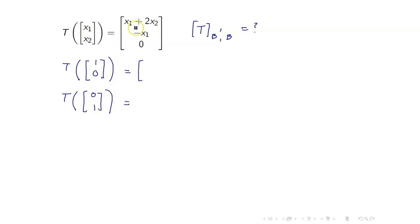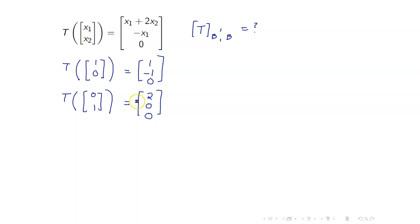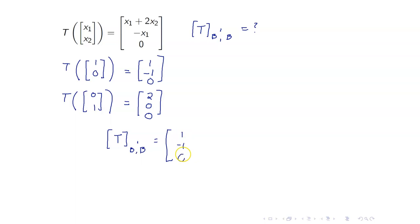T of (1, 0) is equal to 1 plus 2 times 0, so that's 1; the x1 component is negative 1, and then 0. T of (0, 1) is equal to 0 plus 2, 0, 0. Take note that this is also the coordinate vector with respect to the standard bases of R3. Therefore, the matrix representation from B to B' is just the matrix whose columns are (1, negative 1, 0) and (2, 0, 0).